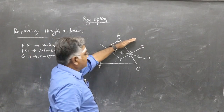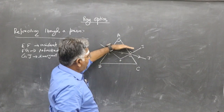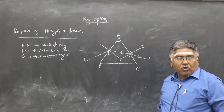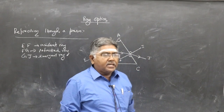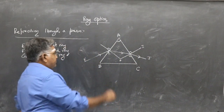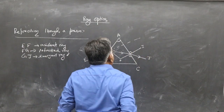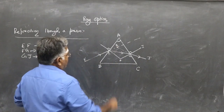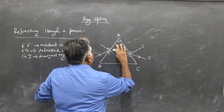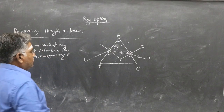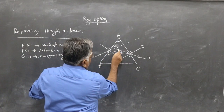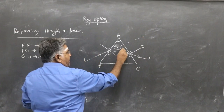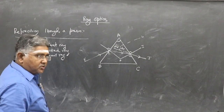We now find the angle of deviation. Initially the ray goes along EF, and finally it emerges along GK. The angle between the incident ray and the emergent ray is called the angle of deviation, denoted D. We extend the incident ray and label the intersection point K; the angle KGL is the deviation.